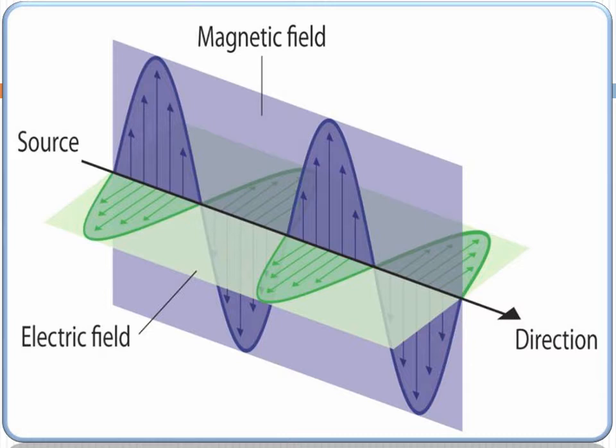The second most important point is electromagnetic radiation can travel in vacuum. Ye chumba ki tarange nirwaat me bhi travel kar sakti hai. And the third and last very important point is electromagnetic radiation cannot be deflected in electric and magnetic fields.